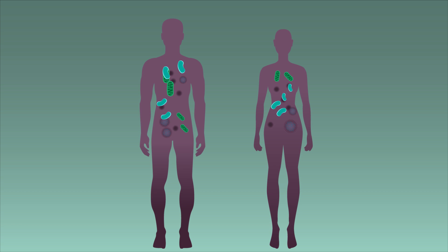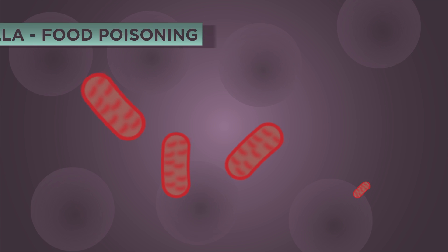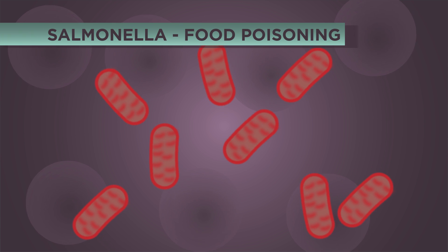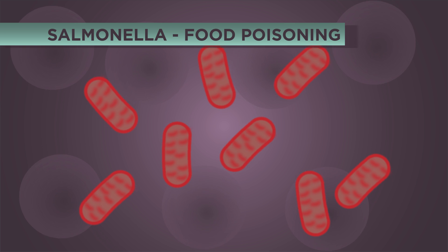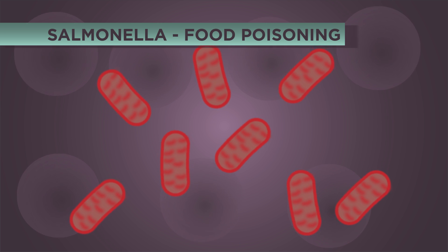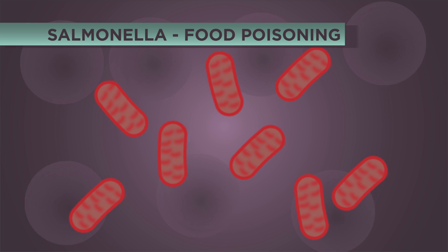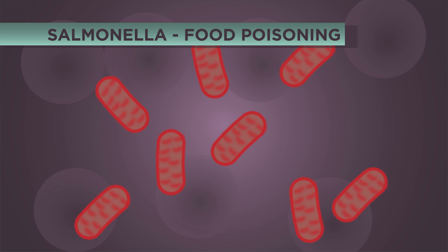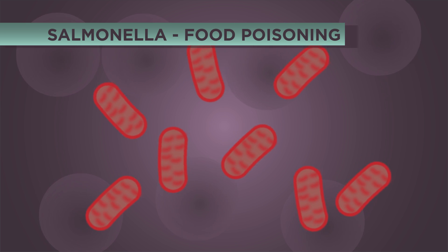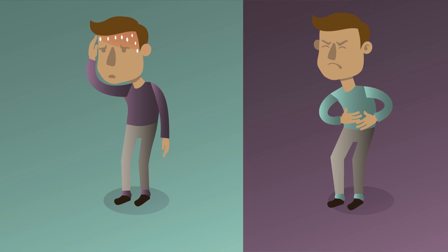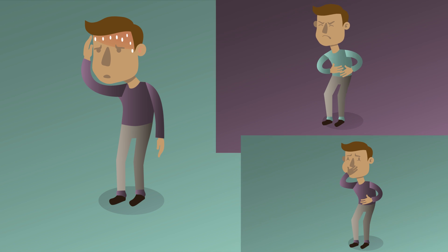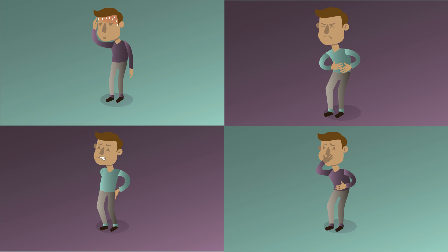Let's take a closer look at a few. First off, we have salmonella, a type of food poisoning caused by salmonella bacteria, which causes fever, abdominal cramps, vomiting and diarrhoea due to the toxins the bacteria release.